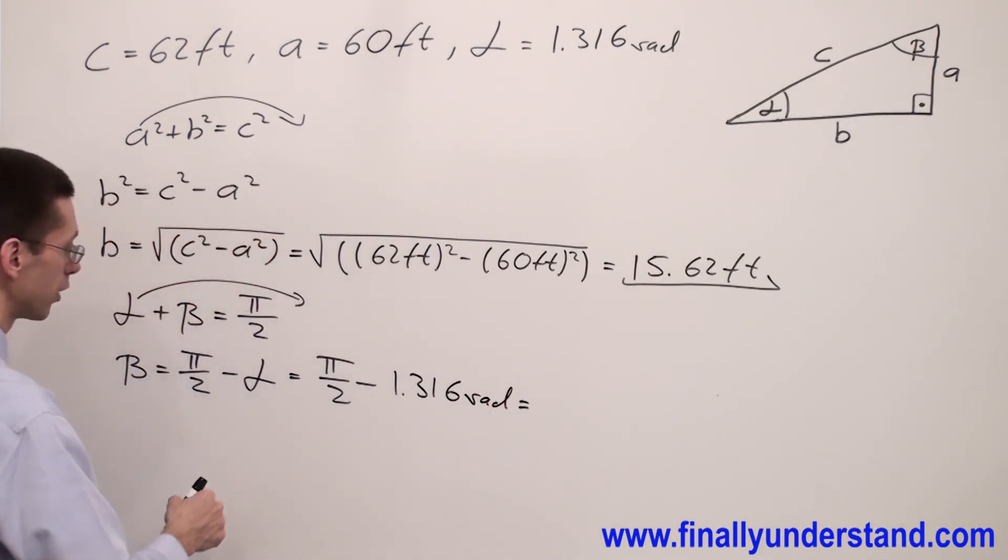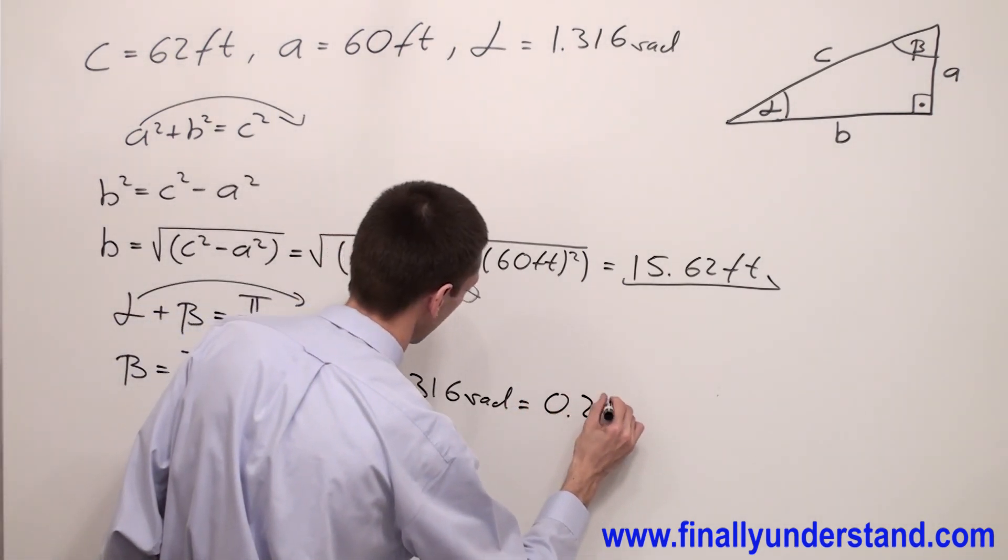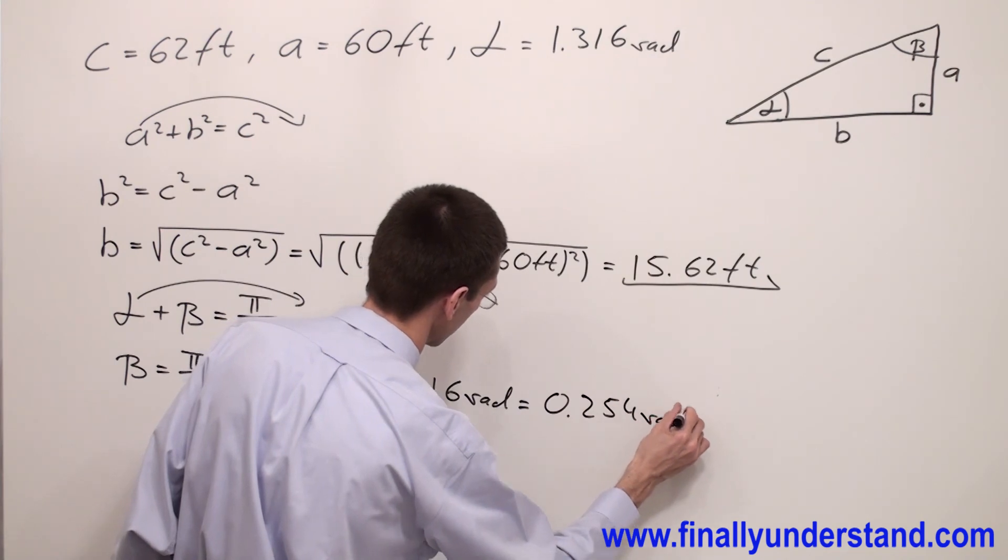Plugging these values into the calculator, you're supposed to get 0.254 radians.